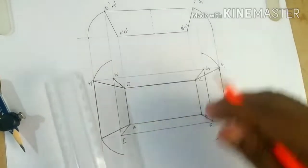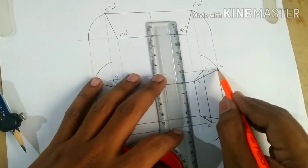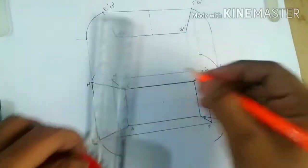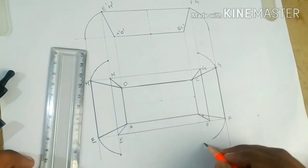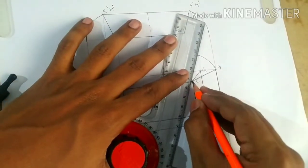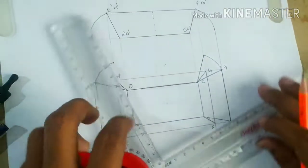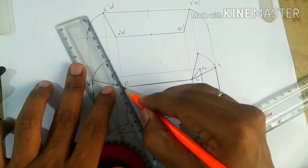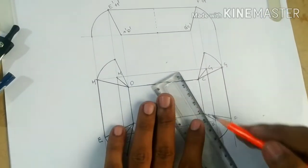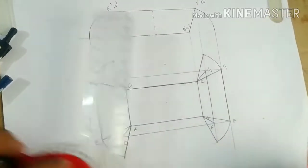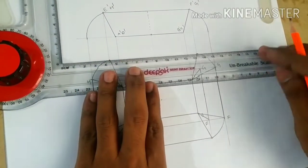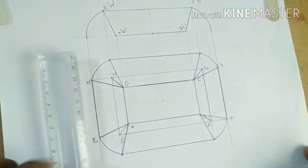Draw the arcs only up to the G point — do not extend further. Extend the points horizontally as we did before, consider these as the final four corner points, and join all the points to complete the trapezoids forming the top and bottom developed surfaces.